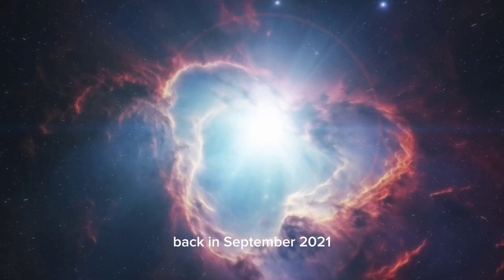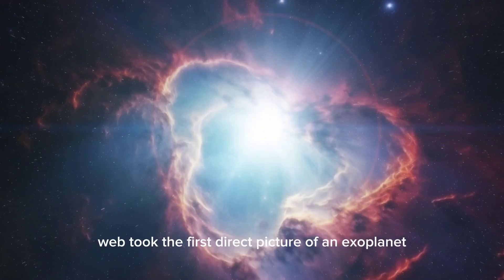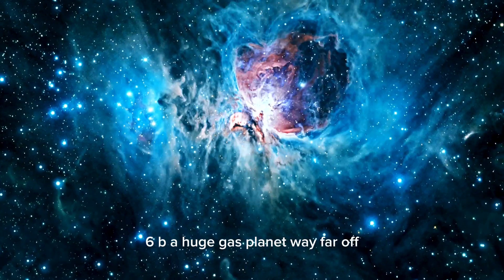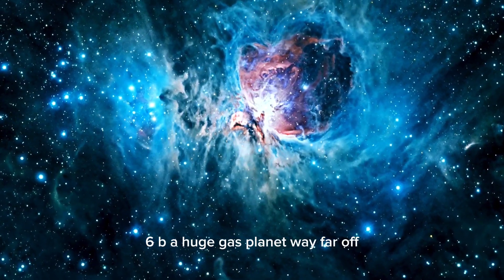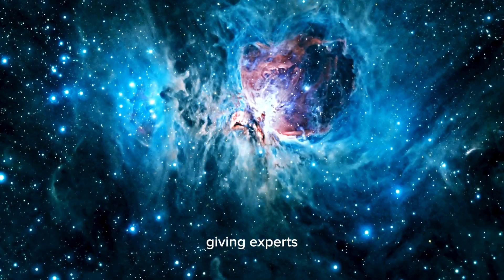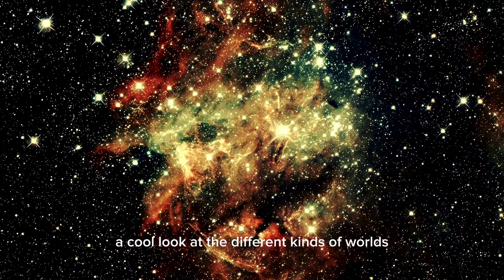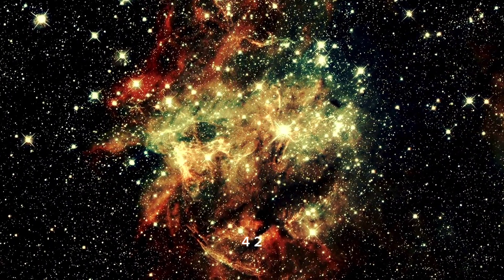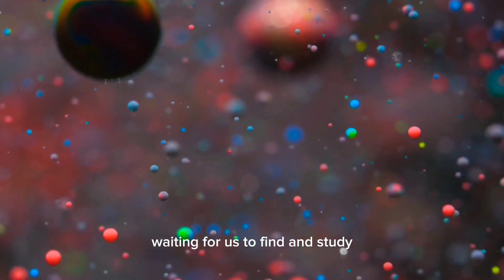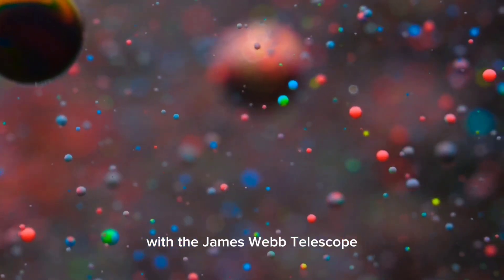Back in September 2021, Webb took the first direct picture of an exoplanet, showing us HIP-65426b, a huge gas planet way far off. This was a big deal in exoplanet science, giving experts a cool look at the different kinds of worlds in our galaxy. HIP-65426b is just one of tons of exoplanets out there waiting for us to find and study with the James Webb Telescope.